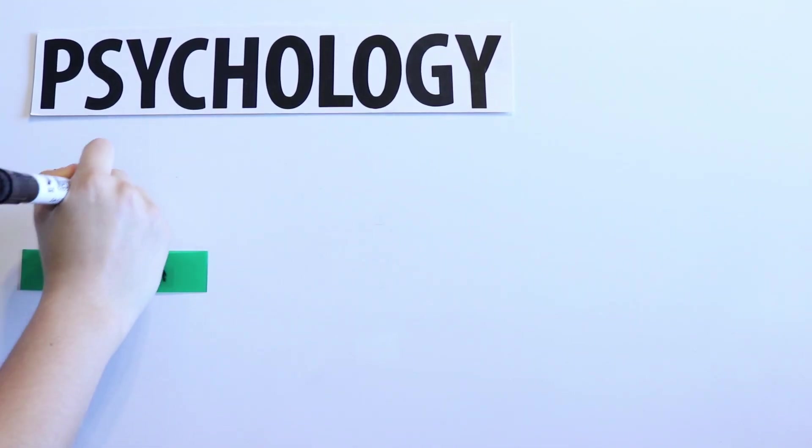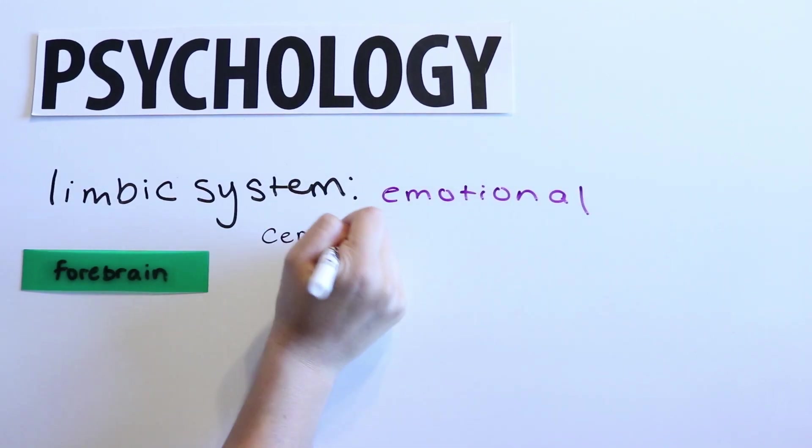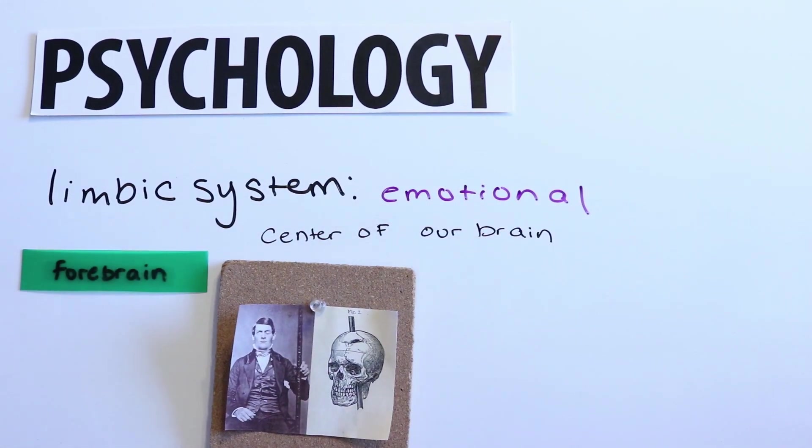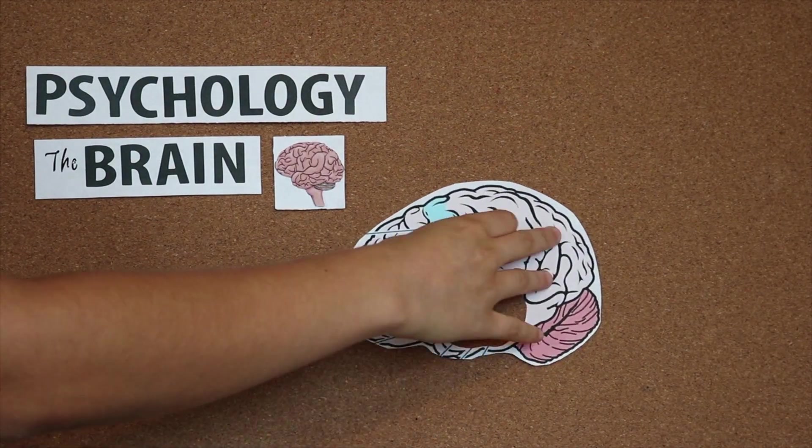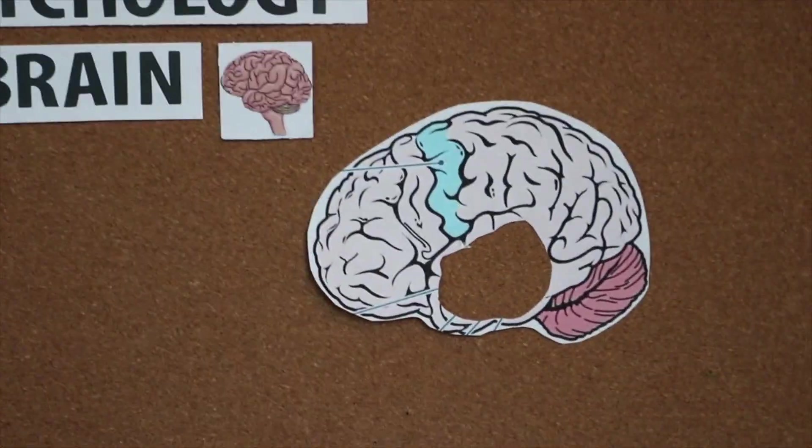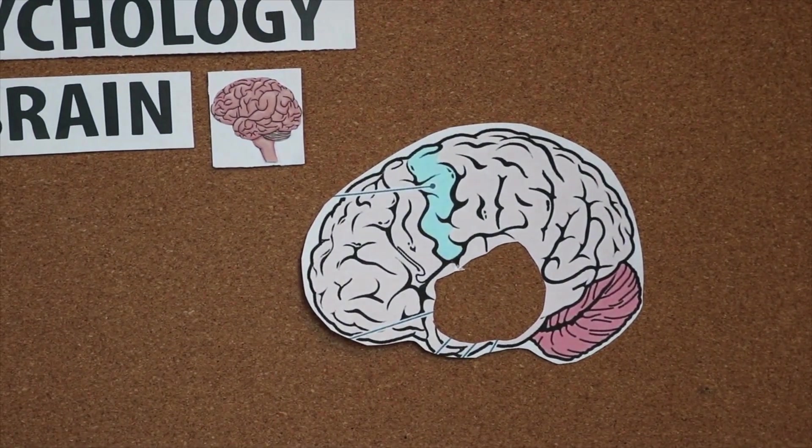Lastly is the forebrain, containing our limbic system, or the emotional center of our brain. You may recall that the forebrain is where Phineas Gage sustained the most damage. Had the rod hit him any lower, he may have died, but instead, he just changed. This is because the limbic system contains three very important things that allow for higher brain function and human behavior.